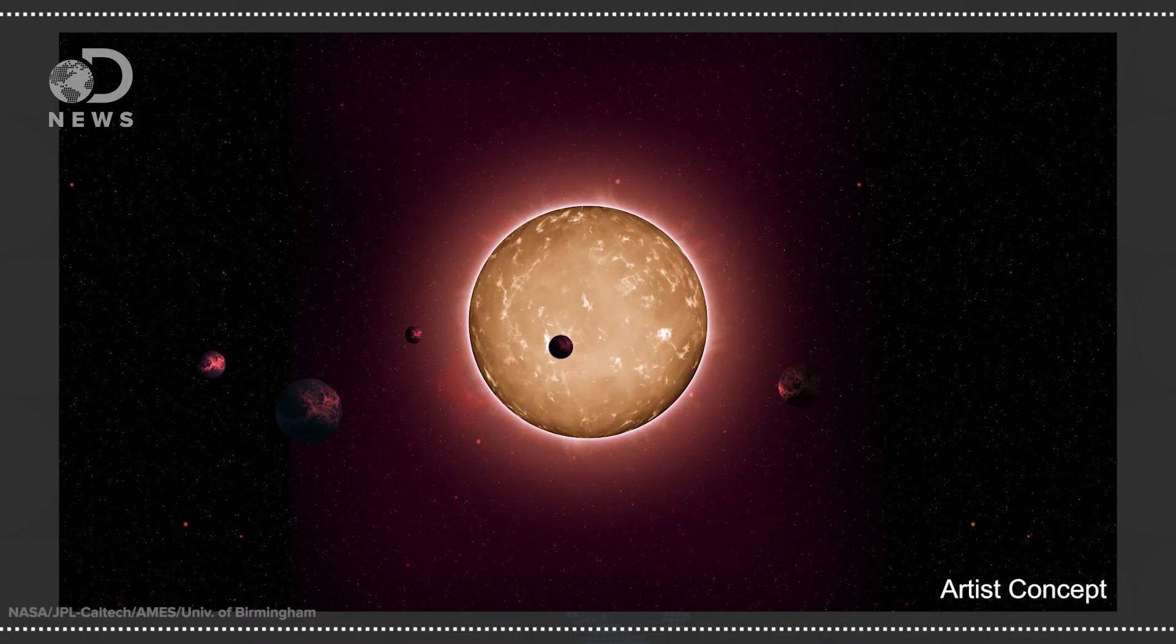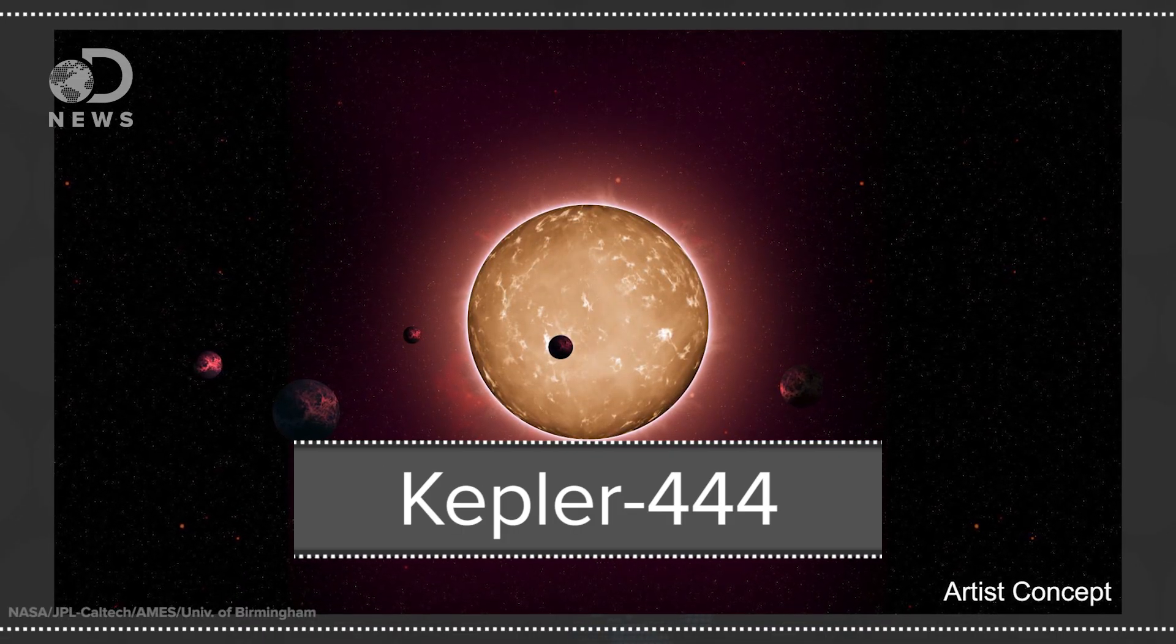Keeping an eye on the sky has also helped us feel a little less alone. A study in the Astrophysical Journal found Kepler-444, a solar system which has 5 Earth-like planets orbiting it in a way very similar to our own.